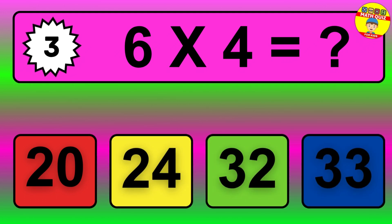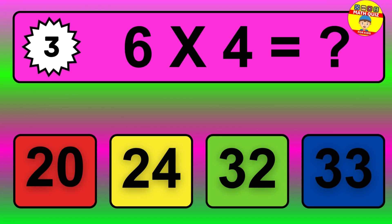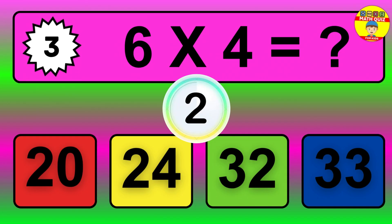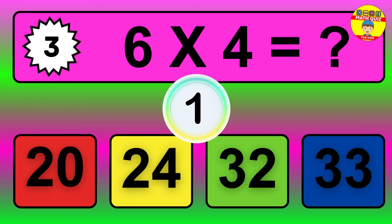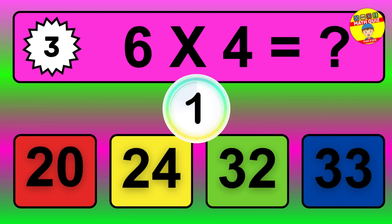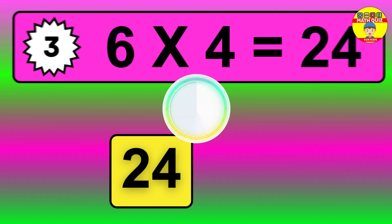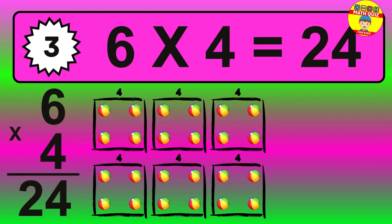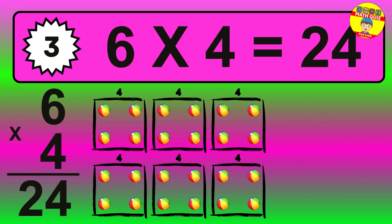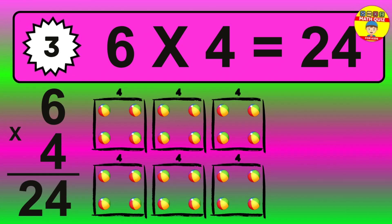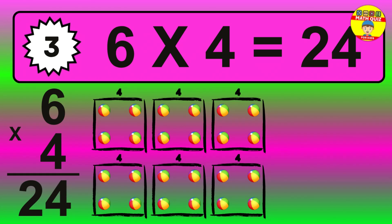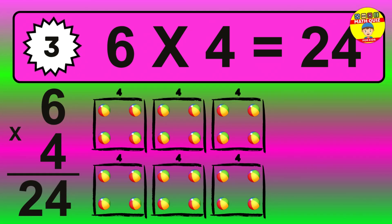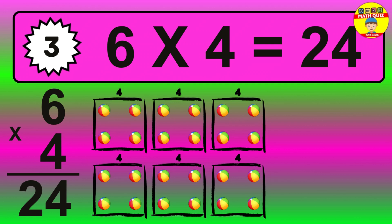Question 3. 6 times 4 equals what? The answer is 6 times 4 is 24. To calculate, we have 6 groups with 4 balls each one. So, how many balls do we have? 24 balls.